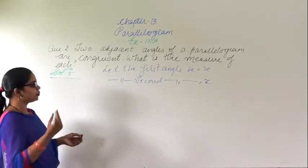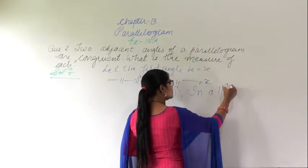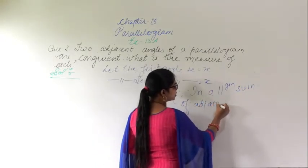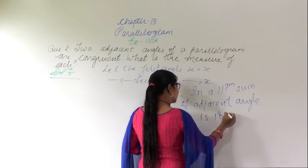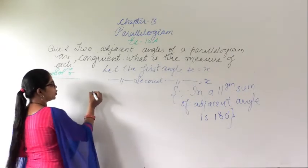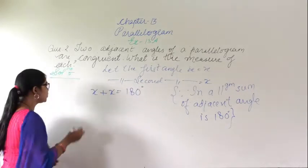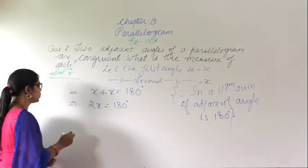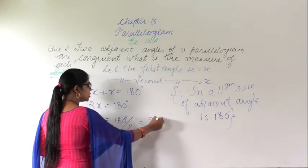In a parallelogram, the sum of adjacent angles is 180 degrees. So here, X plus X equals 180 degrees. From here, 2X equals 180 degrees. Therefore, X equals 180 degrees divided by 2, which is 90 degrees.